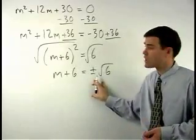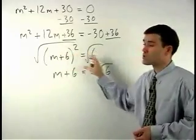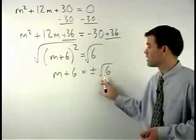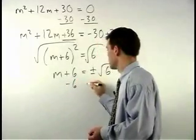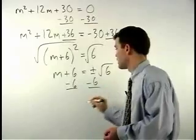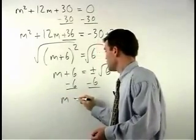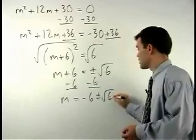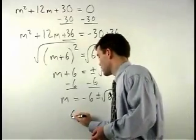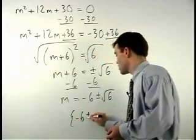Don't forget to use plus or minus when square rooting both sides of an equation. To get m by itself, we subtract 6 from both sides, and we have m equals negative 6 plus or minus root 6. And let's write our answer in set notation.